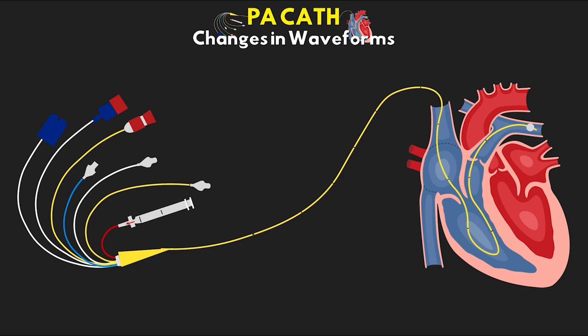In a previous lesson, we looked at the different waveforms that we see at various points along the path of the PA catheter. Those were the normal expectations of what we'd see, but especially with the sick patients in the ICU, we can have changes to these waveforms and values. I'll discuss several abnormalities, though these are certainly not all-inclusive. As we go through, I'll flash up the normal waveforms and values as reference so we have something to compare to.